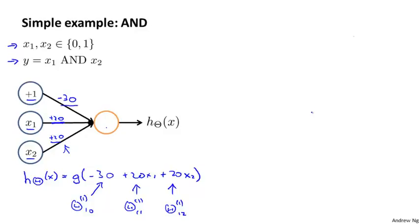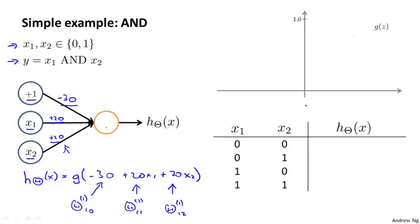Let's look at what this little single neuron network will compute. Just to remind you, the sigmoid activation function g of z looks like this. It starts from 0, rises smoothly, crosses 0.5, and then it asymptotes at 1. And to give you some landmarks, if the horizontal axis value z is equal to 4.6, then the sigmoid function is equal to 0.99, this is very close to 1. And kind of symmetrically, if it's negative 4.6, then the sigmoid function there is equal to 0.01, this is very close to 0.